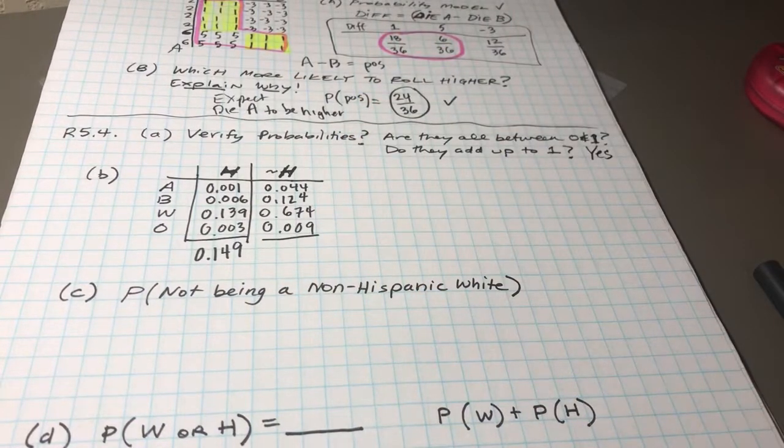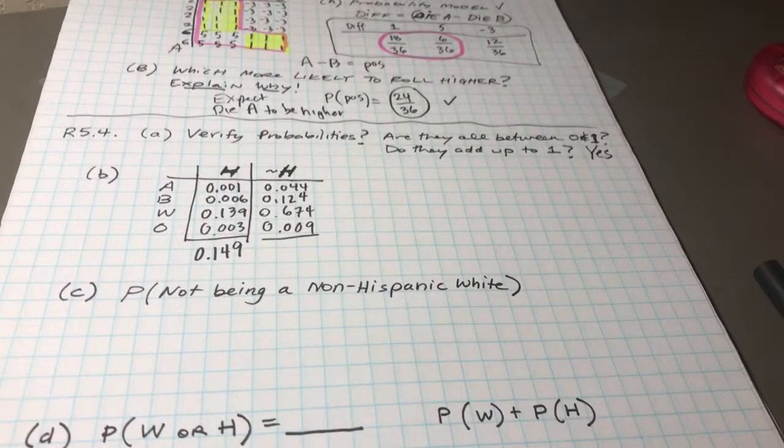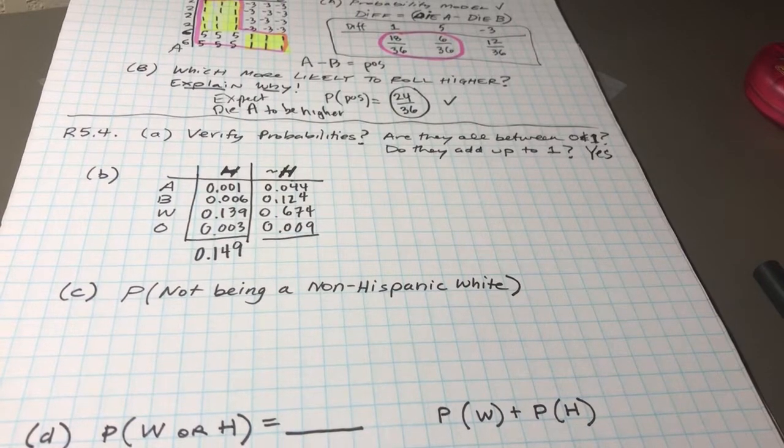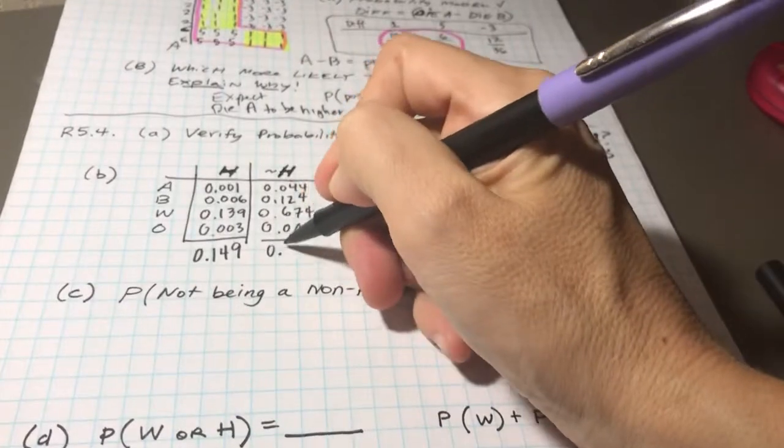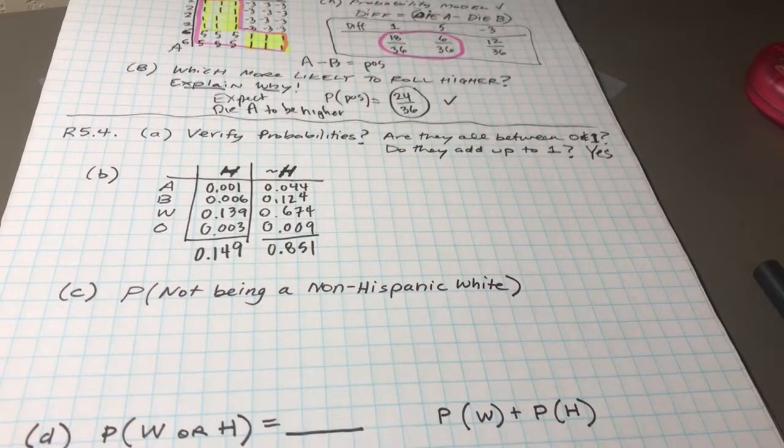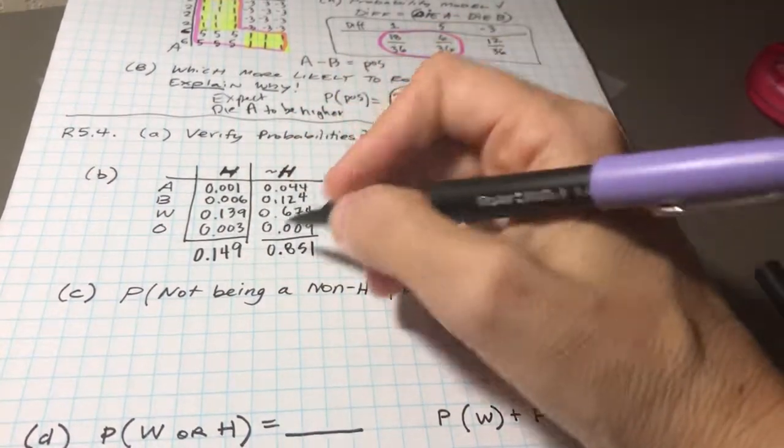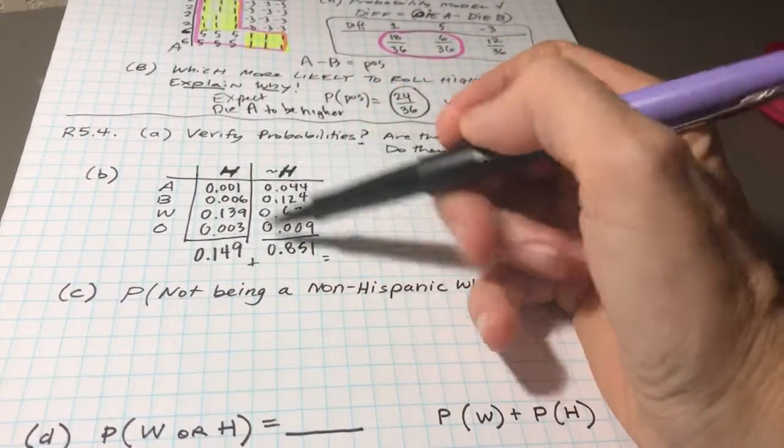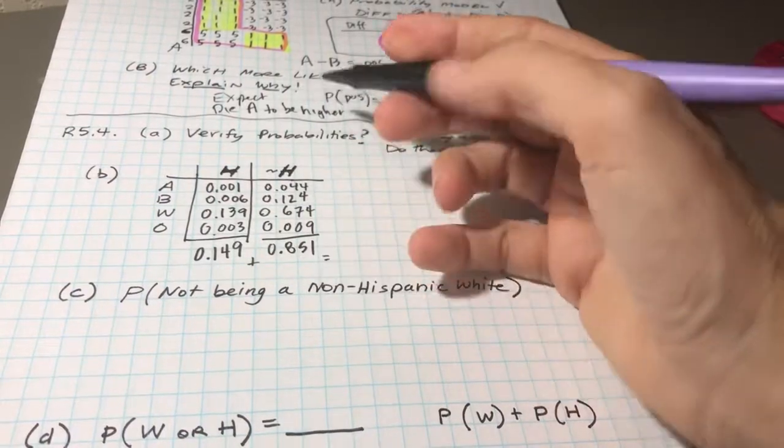And usually it seemed like if they identified as Hispanic, predominantly as white Hispanic. Now looking at people who did not identify as Hispanic, we're going to verify that these add up. And I got 0.851 perfect. And these two add up to one.